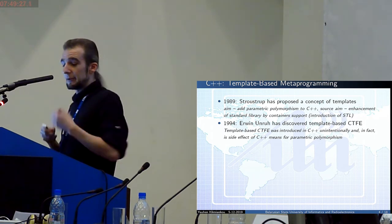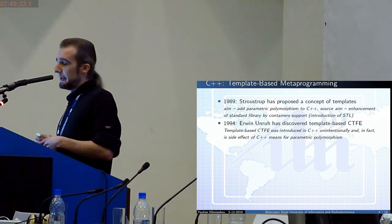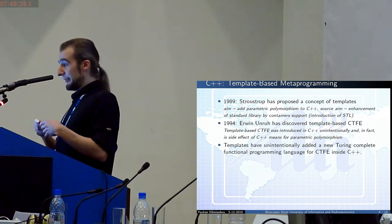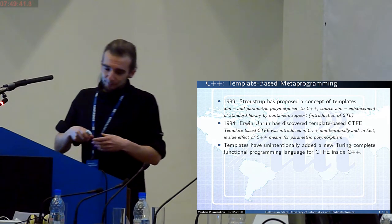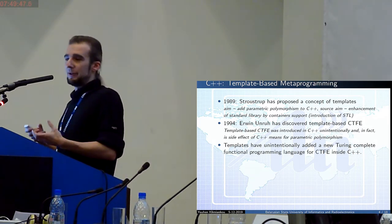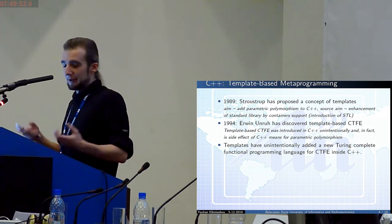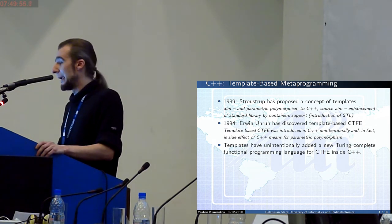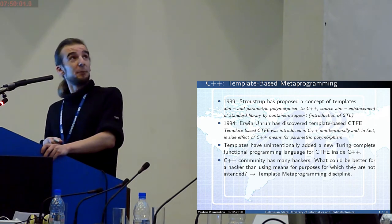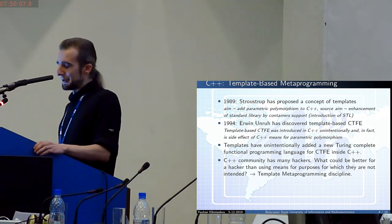There is an interesting report by Edgar Anner, who actually found it out and demonstrated it at one of the standardization committee meetings. Because of adding the template mechanism, C++ gained another sub-language — a fully-fledged language that can be used for optimization at the compilation stage. This was not missed by the developer community, since it is interesting and can be applied.